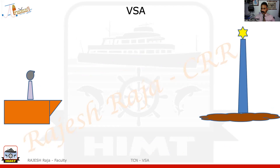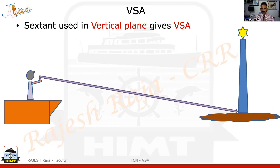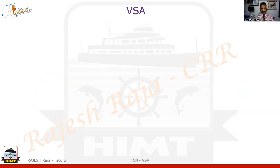For VSA, I use a single object — I don't use multiple objects like HSA. This time I keep my sextant in a vertical plane, so I measure the angle between the top and bottom of a structure: it could be a lighthouse, a hilltop, or anything. When I measure this angle in a vertical plane, this is called the vertical angle, or vertical sextant angle. One VSA gives me only one position circle.